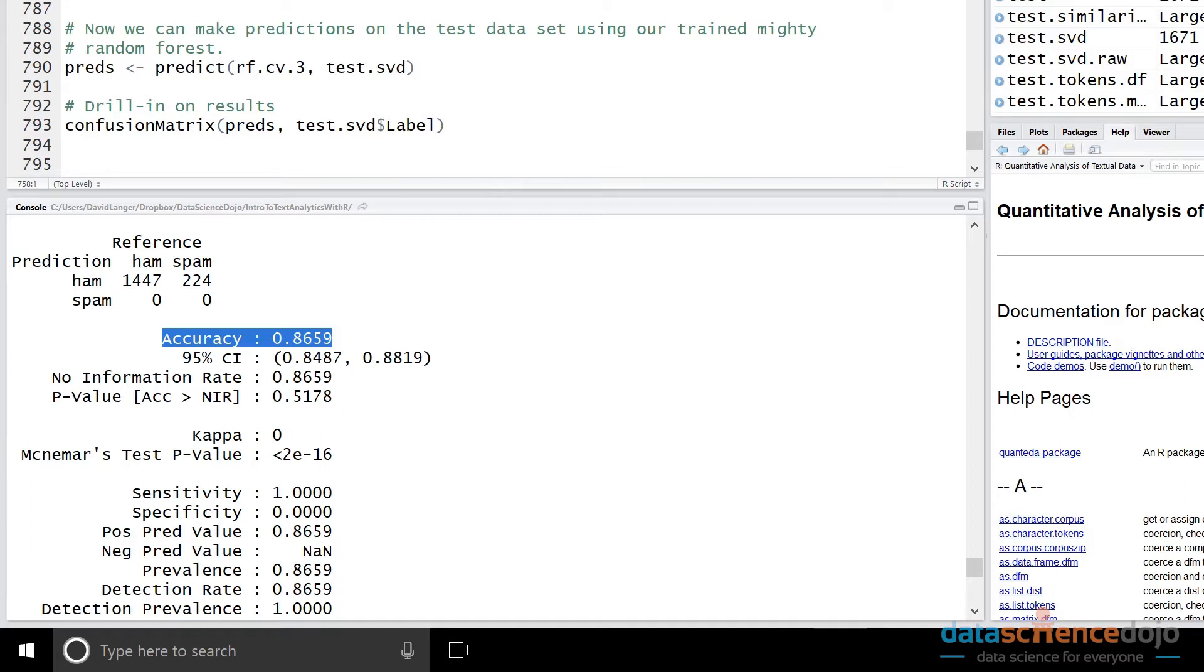However, we also hypothesized, we also worried that that feature may overfit because the characteristics of spam in the training set may not necessarily be the same as the characteristics of spam in the test set. And ergo, that feature may be very powerful, but only in terms of the training data. And this hypothesis has been borne out by what we see here, which is this accuracy, which is far lower than what we saw in our cross-validation runs on the training data.